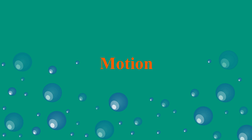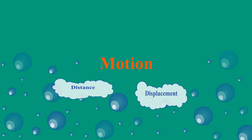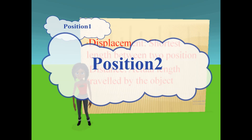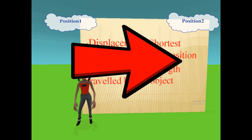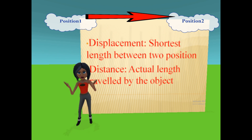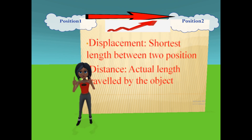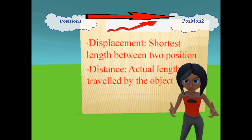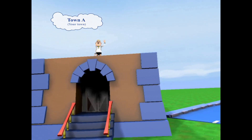Now that we have defined motion, we need to understand two important terms: distance and displacement. Displacement is the shortest length between two positions in a straight line, while distance is the actual length traveled by an object to reach from position 1 to position 2. Since it is the actual length, it may or may not be in a straight line.